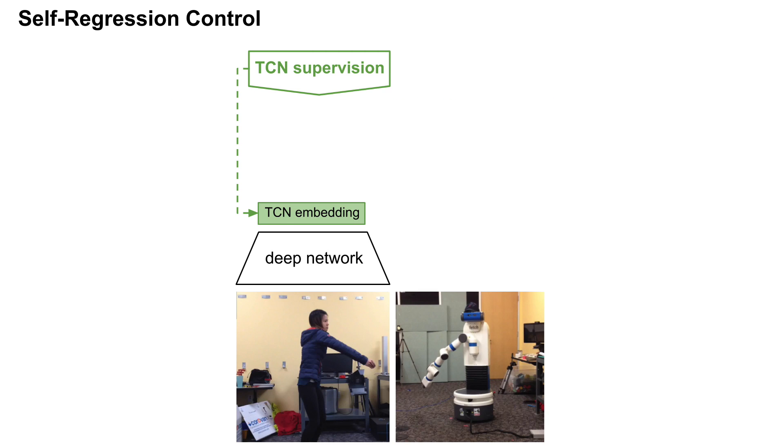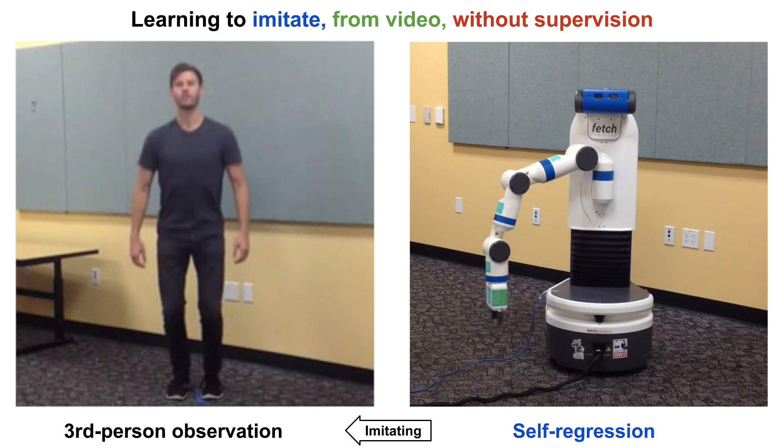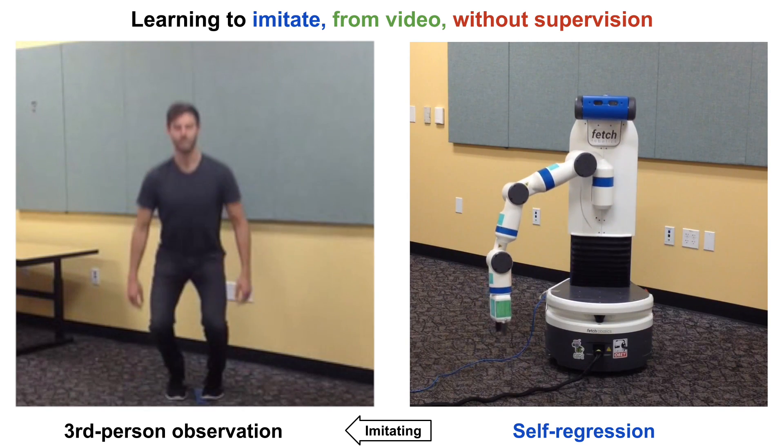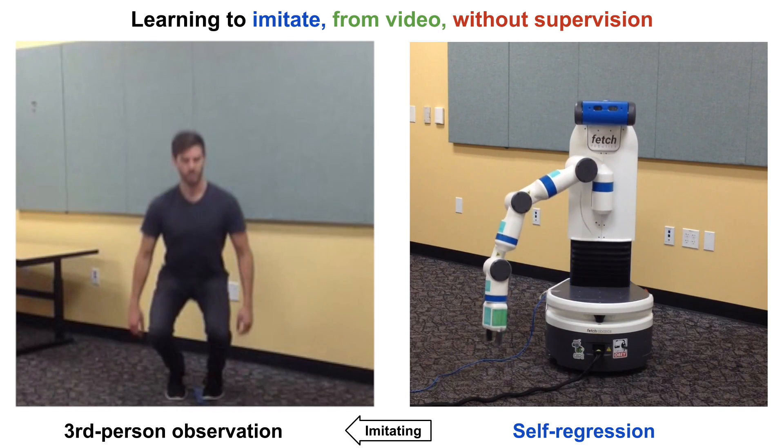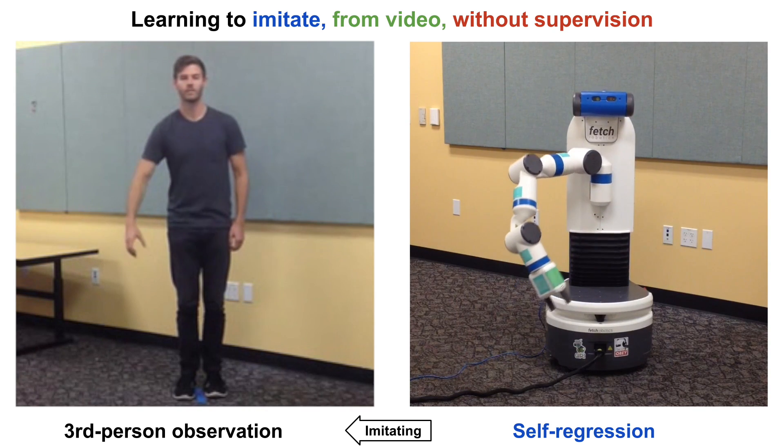Because the TCN embedding is invariant to humans and robots, the robot can then imitate humans instead of imitating itself. Here we show the resulting imitation using a real robot. We observe that the robot was able to discover the mapping between its own body and a human body entirely on its own using TCN and self-regression.